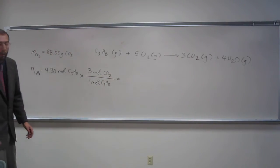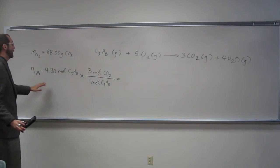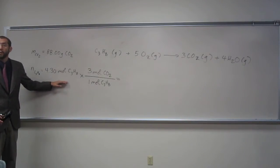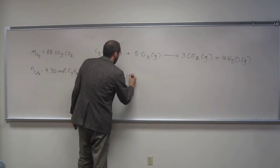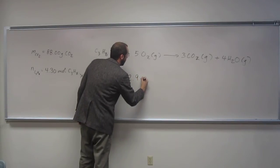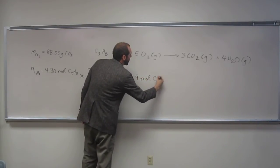What we're doing here is saying if all of these reacted, so if this gave us maximum or theoretical yield, the amount of carbon dioxide we should have, molar-wise, is 4.3 times 3, which is 12.9 moles of carbon dioxide.